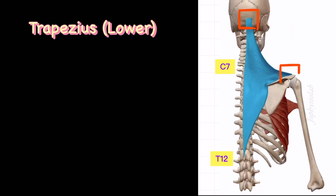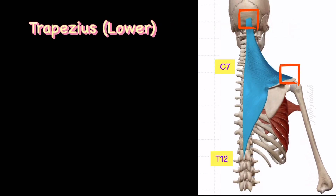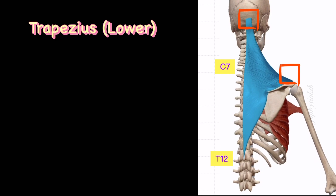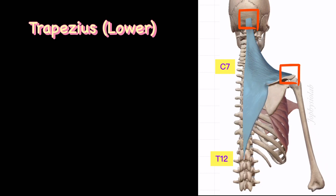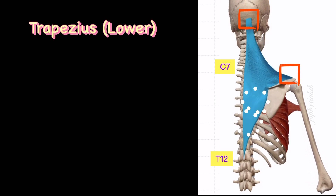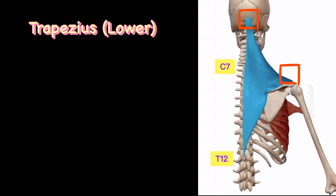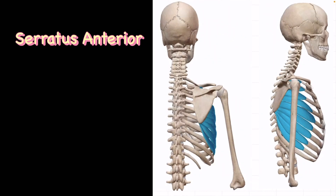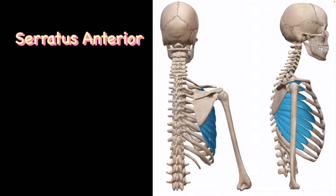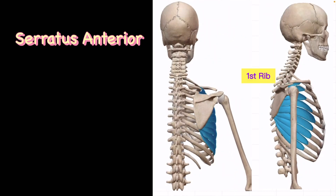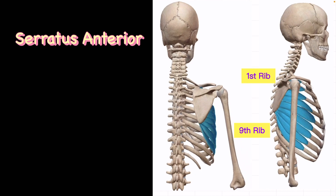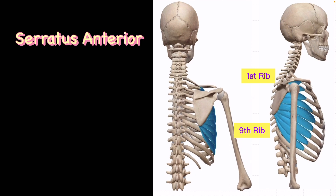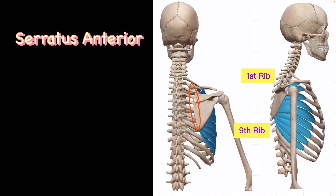The lower part of the trapezius, also known as lower trapezius, is involved in the depression of the scapula. The serratus anterior muscle attachment begins with the 1st rib to the 9th rib and it inserts at the medial border of the scapula.